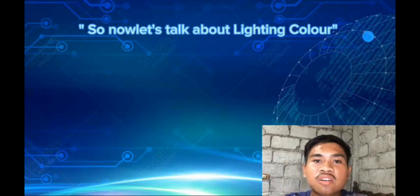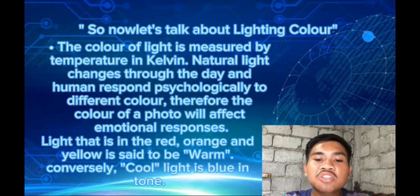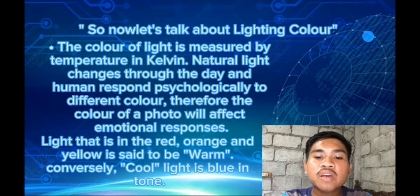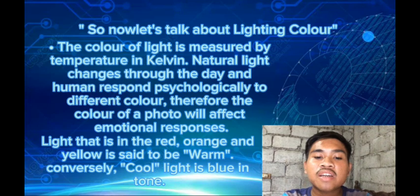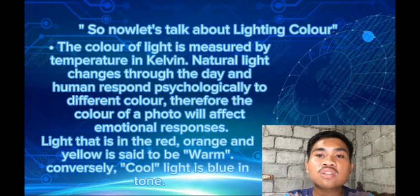The color of light is measured by temperature in Kelvin. Natural light changes throughout the day and humans respond psychologically to different colors; therefore, the color of a photo will affect emotional responses. Light that is in the red, orange, and yellow range is said to be warm. Conversely, cool light is blue in tone.